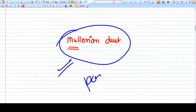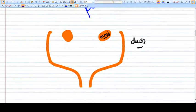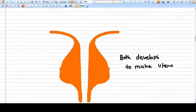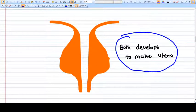So mullerian duct or paramesonephric duct is a very important structure for female. Now let's see this. This is the ovary and these are both sides of ducts.